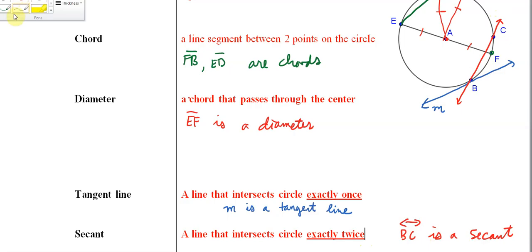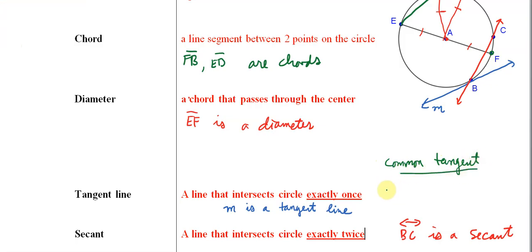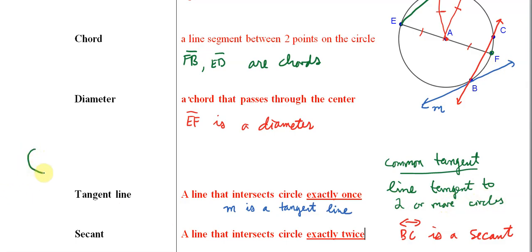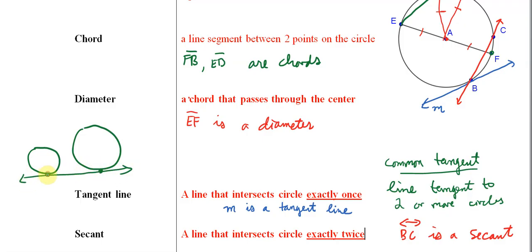Some other related terminology: a common tangent is a line that is tangent to two or more circles. For example, if I have two circles, I can have a line that's tangent to the first circle and also tangent to the second circle. This line, which we could call K, is a common tangent.